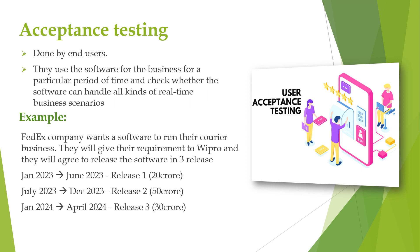This is how the releases are done. During the first release in June 2023, the test lead came to the project manager and said there was a critical bug in the application, needing at least another 10 to 15 days to fix. But the project manager said to first deliver the application to the FedEx team, as they may take another 20 to 30 days to launch it. By that time, the bug would be fixed and the application relaunched — because informing FedEx would mean paying a penalty for missing the release date. This kind of problem used to happen before, and this is why acceptance testing came into existence.